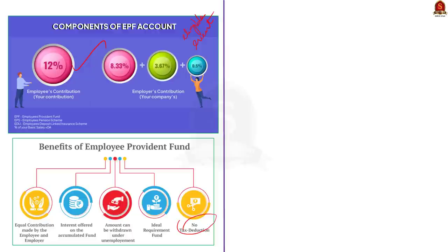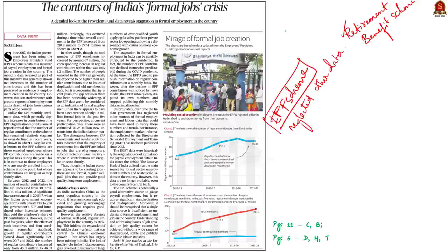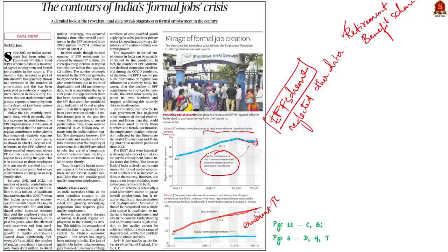Now let us see some of the criticisms mentioned in the news article. The Indian government has been using EPF scheme data to measure formal job creation in the country. However, the number of regular contributors to the EPF scheme has remained relatively stagnant or even declined in recent years, showing that the majority of enrollments into the EPF are temporary or casual workers. Looking at the chart, regular contributors to the EPF remained stagnant while enrollments increased massively.